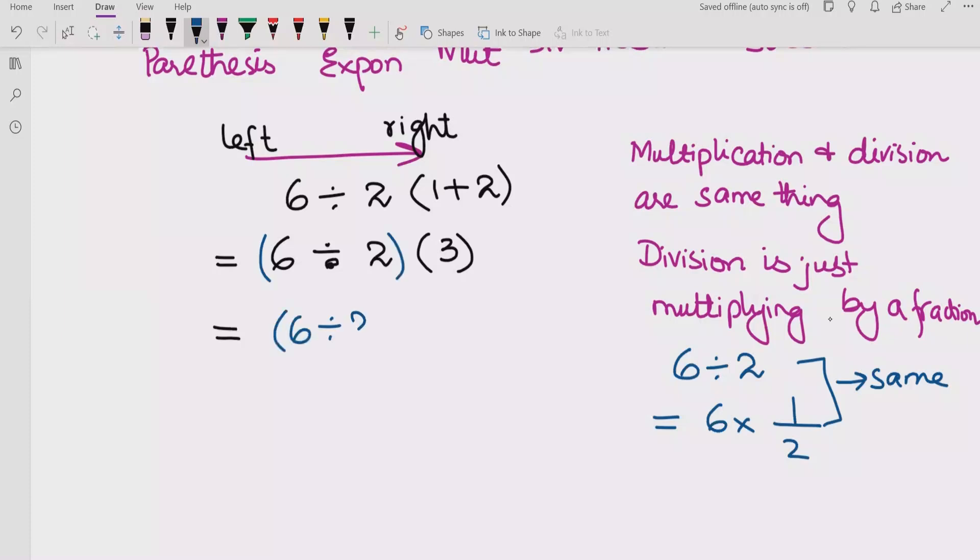So we have 6 divided by 2 and multiply by 3. First, we will divide 6 divided by 2, which is equal to 3. And after that, we multiply by 3. And the logic is this one. Now we multiply both numbers, 3 times 3 is 9. So the correct answer is 9.